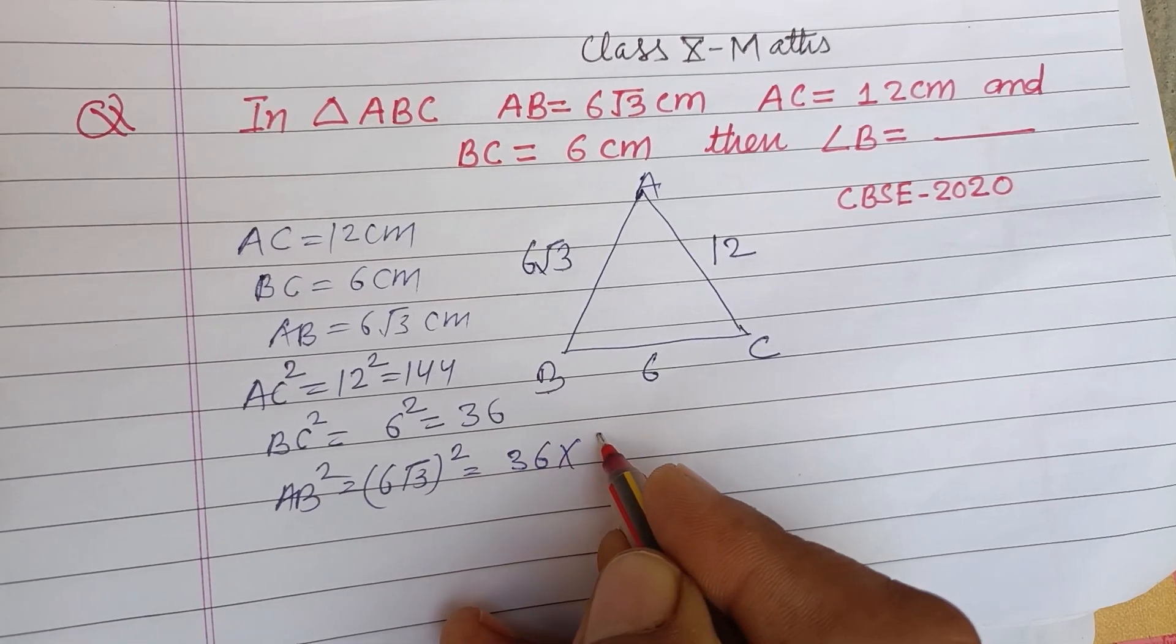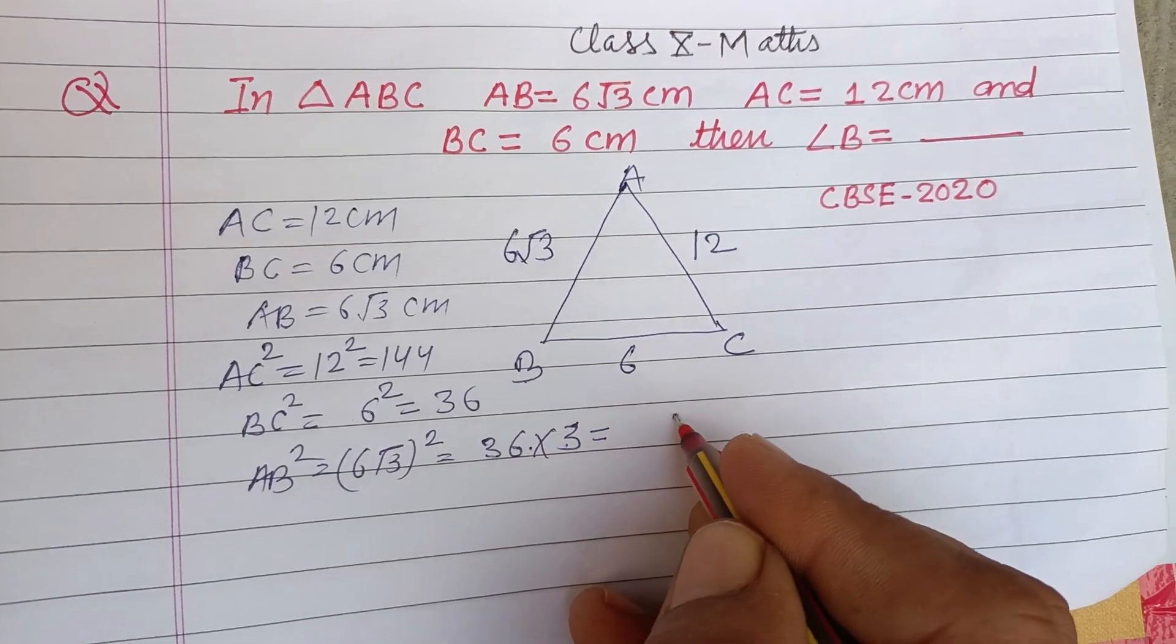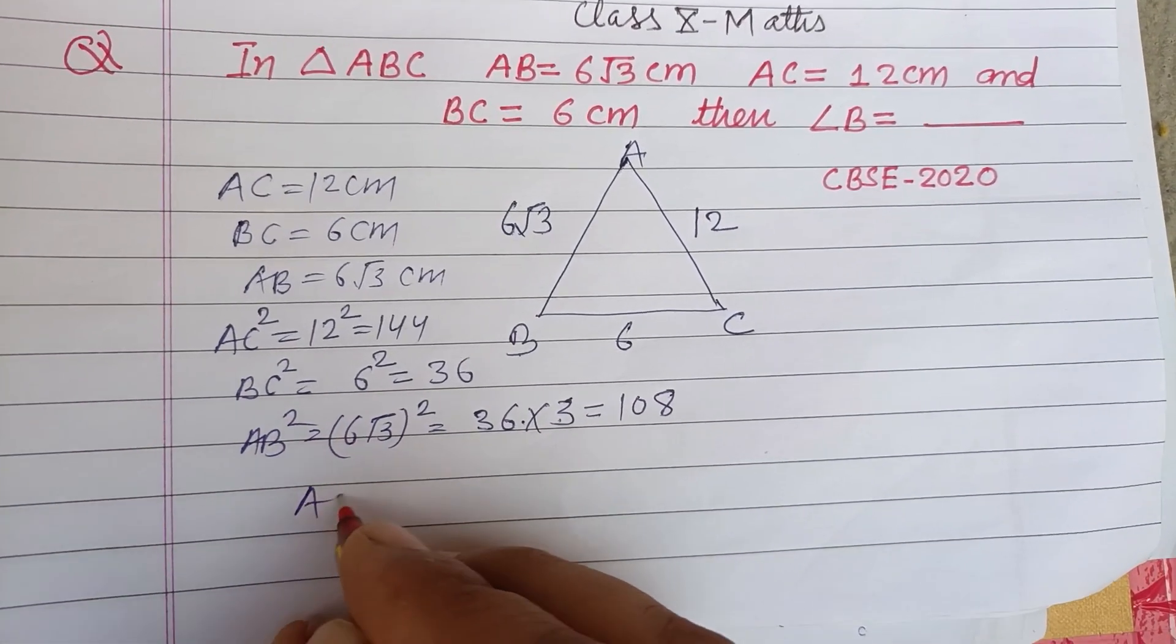And AB squared equals (6√3) squared. 6 squared is 36 into 3, so this will be 36 times 3 which is 108.